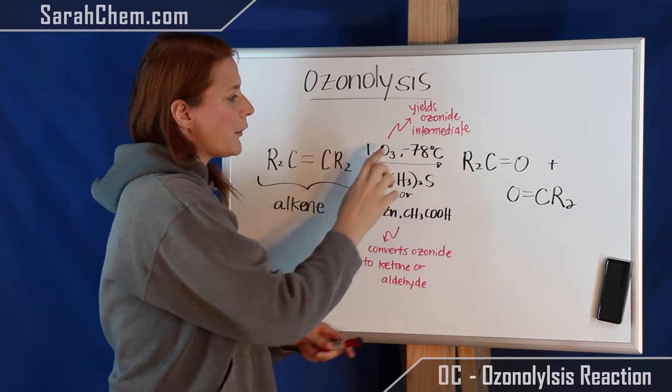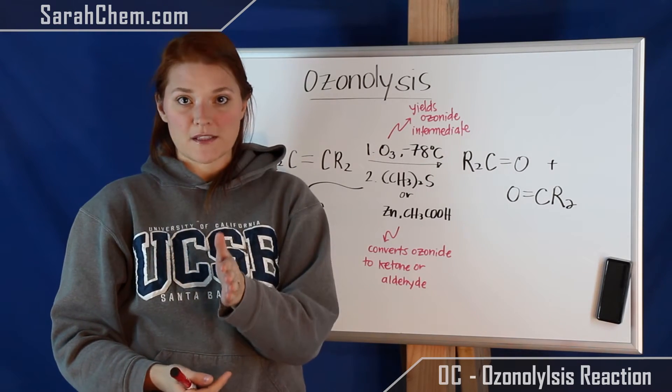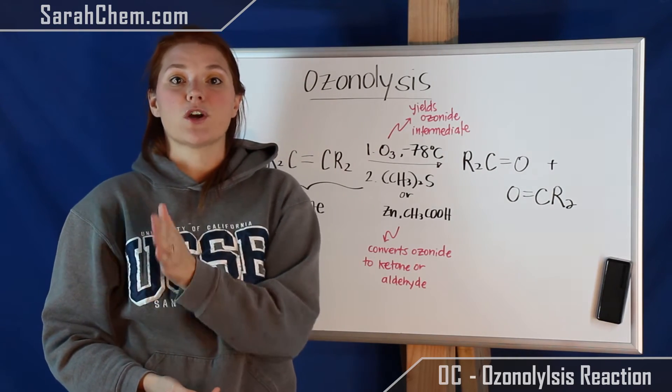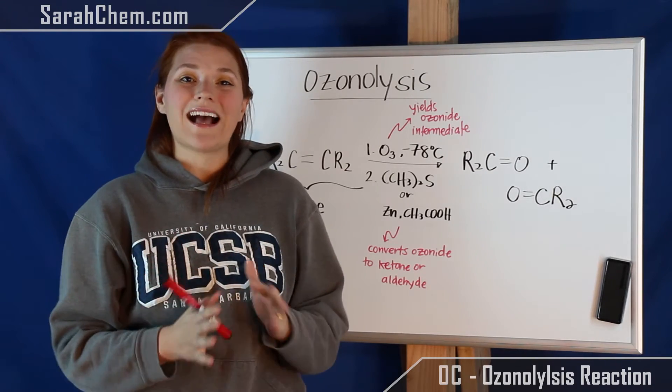The result of this will be the formation of something called ozonide. You're going to first form malozonide, and then that immediately converts to ozonide. Now ozonide on its own is pretty explosive, so we're not going to isolate it.